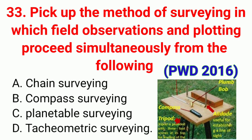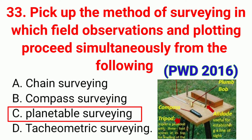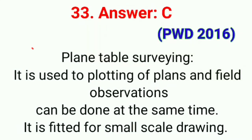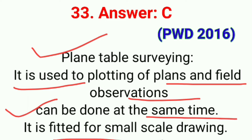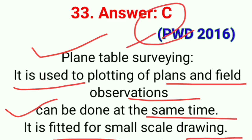Question number thirty-three: The method of surveying in which field observation and plotting proceed simultaneously is. The correct answer is option C, plane table surveying. Plane table surveying is used when plotting of plans and field observation can be done at the same time, and it is suitable for small-scale drawings.